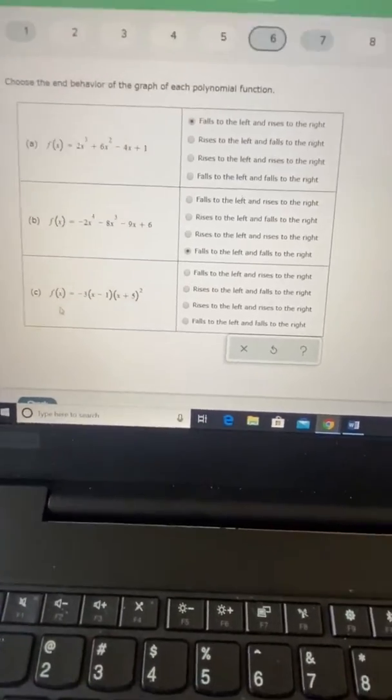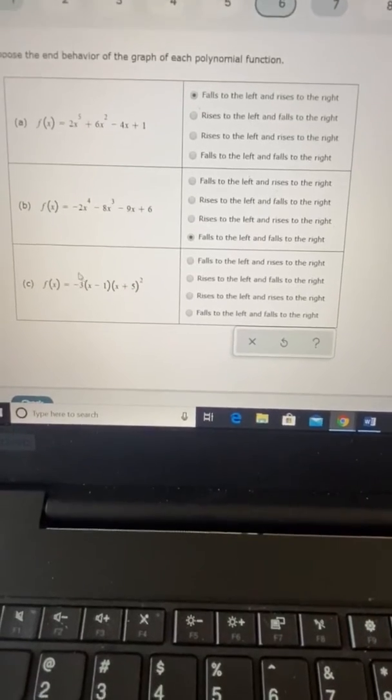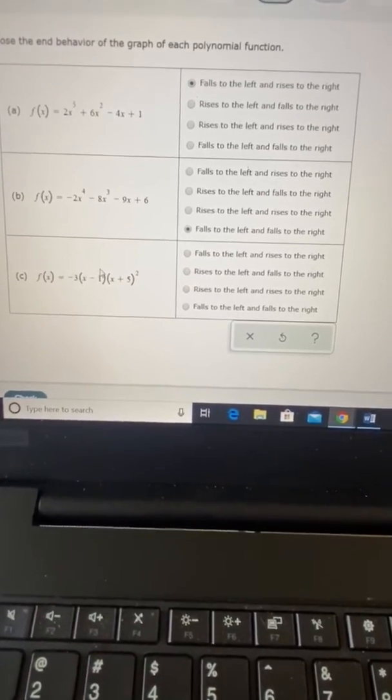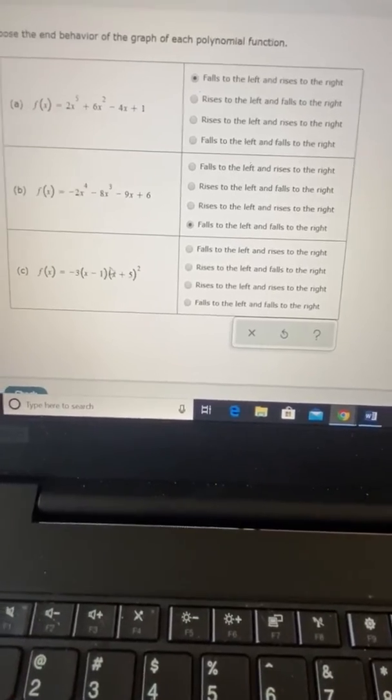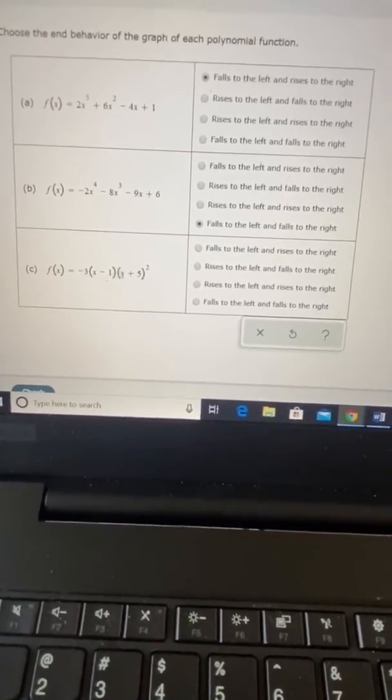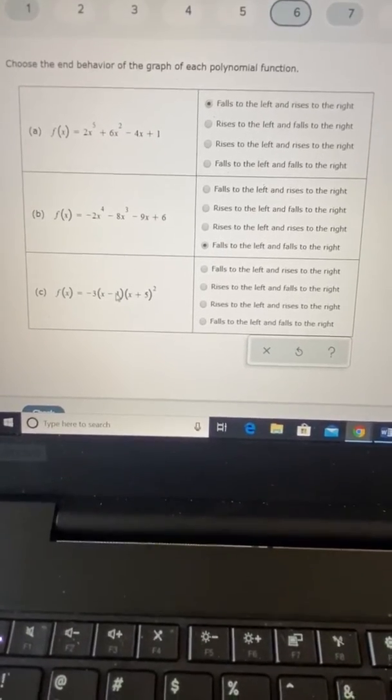C is a little bit trickier. So in this one, it's written not in descending order, not in standard form, but rather in intercept form. You could multiply this all the way out and then convert it to standard form, but there's a much easier way.